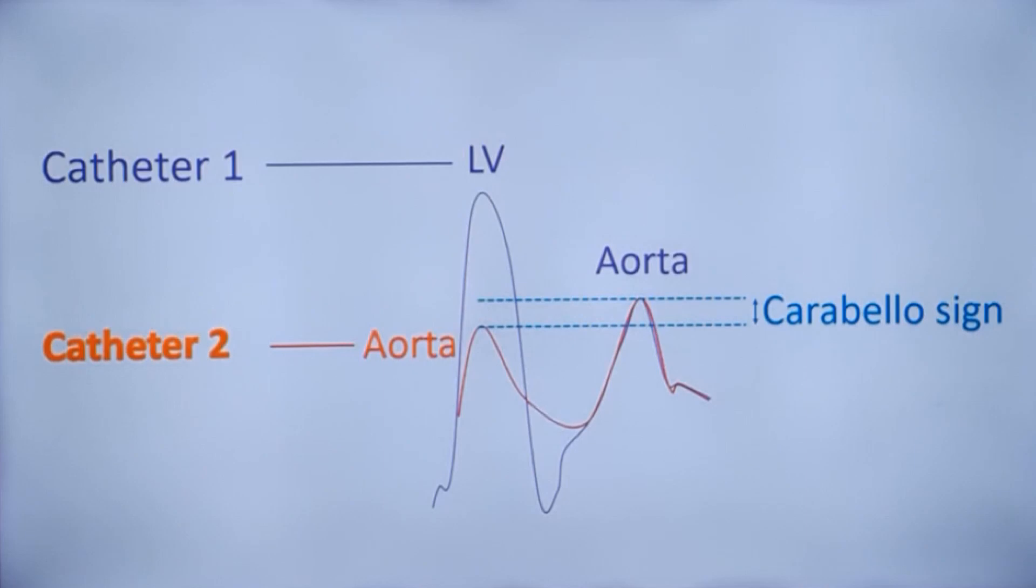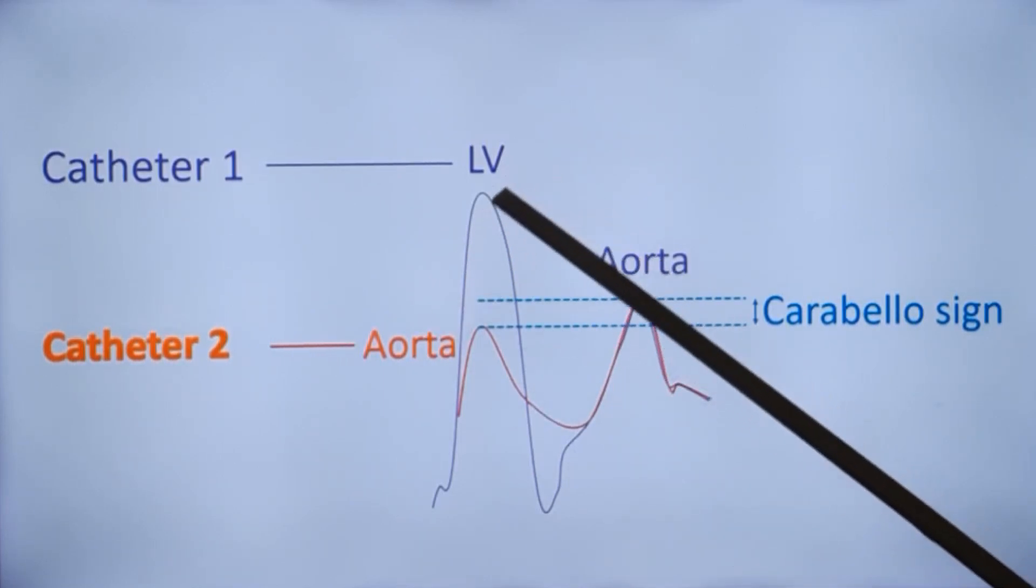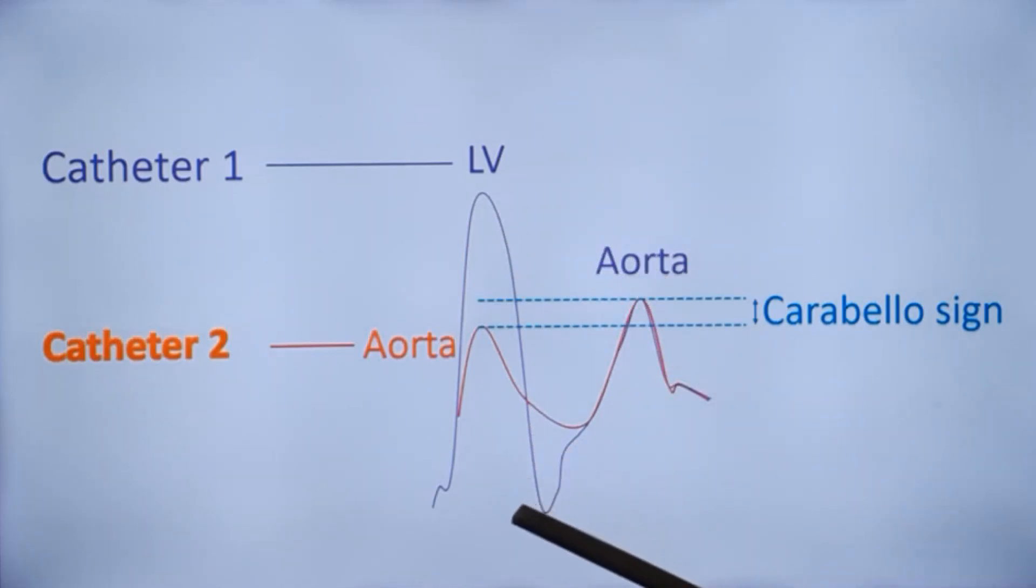This is the demonstration of the Carabello sign. You need catheters, one which has to go into the left ventricle and then pulled back into the aorta.